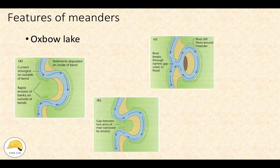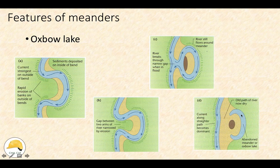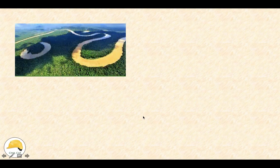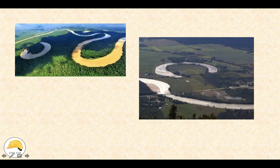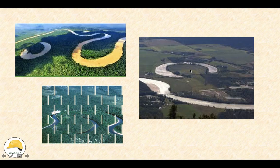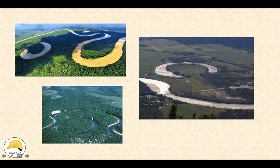A river has a tendency to go straight and cut across the loop. If the loop migrates far enough, the river goes straight and separates the loop. This develops into an oxbow lake, which becomes isolated from the main river channel.